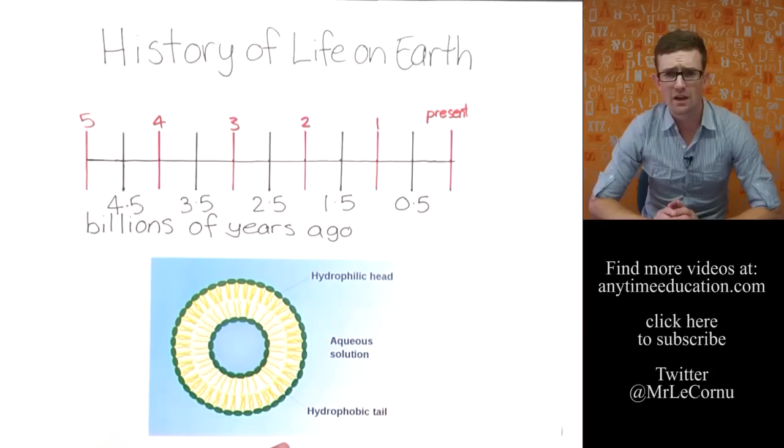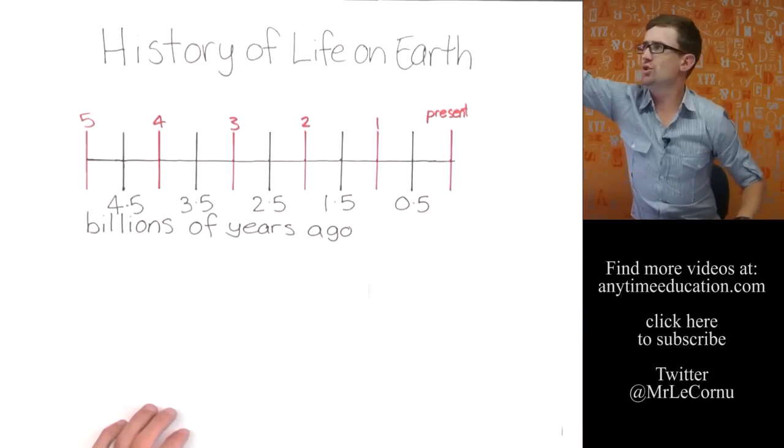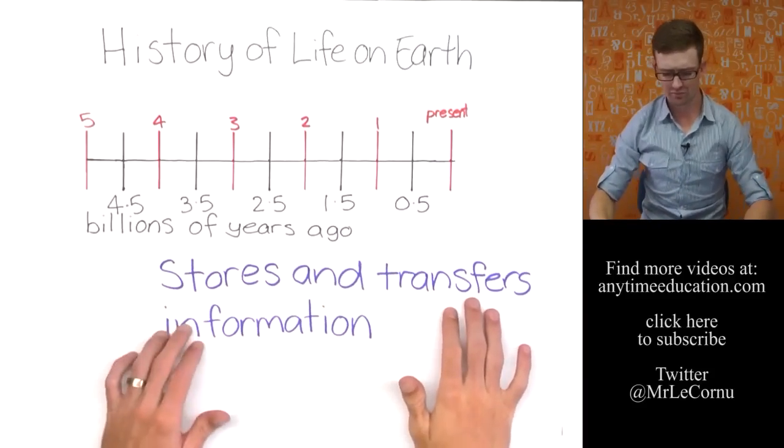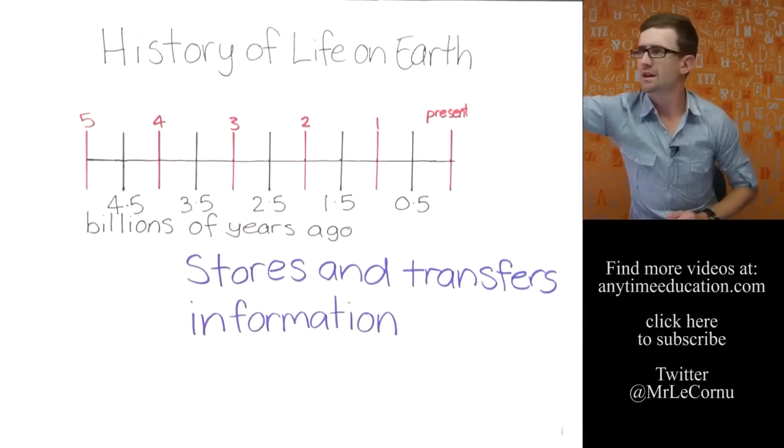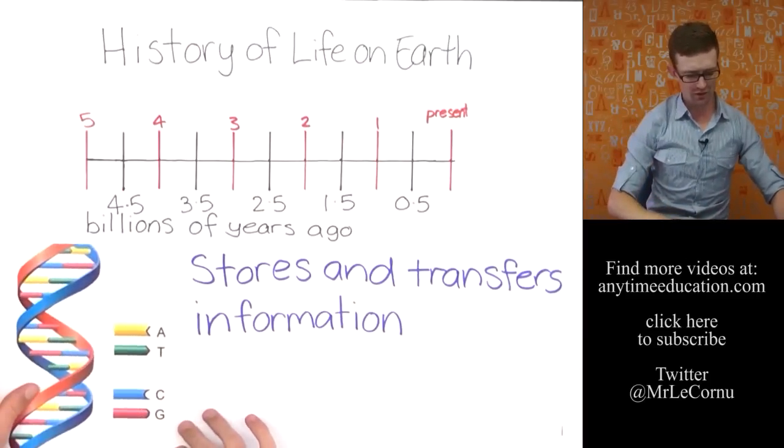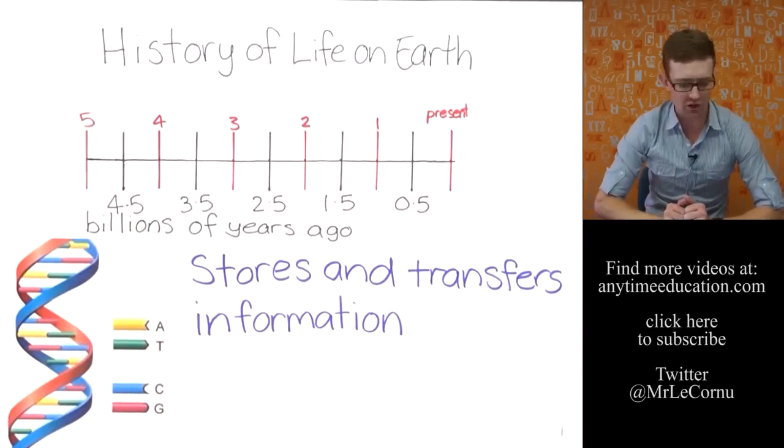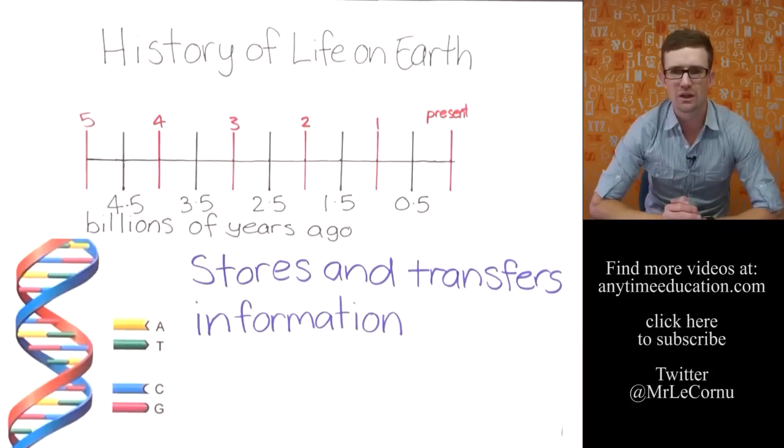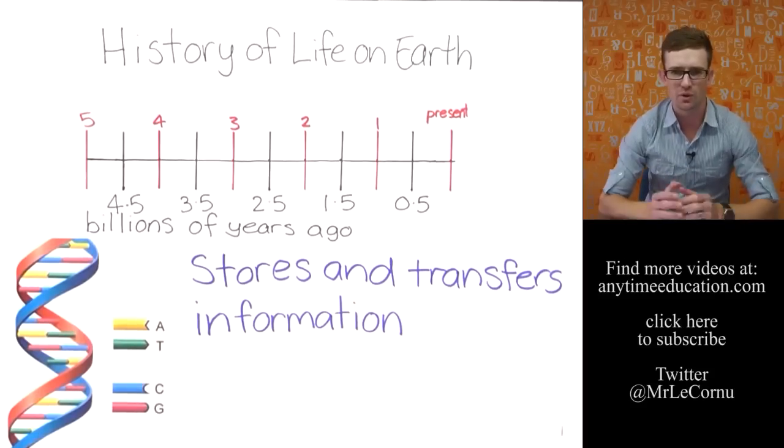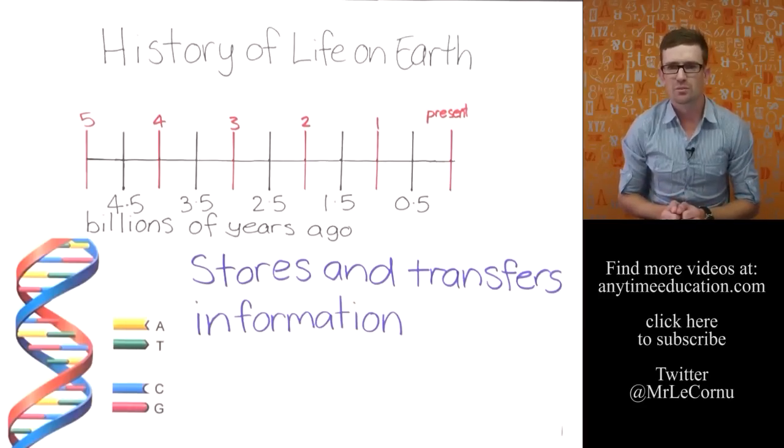Another type of organic compound that formed was one that was able to store and transfer information. That should be triggering something for you there. When we think of storing and transferring information, we think of this molecule here, the DNA. Deoxyribonucleic acid formed. That was able to store and transfer information. And then that was a critical point for life on earth because once we can store and transfer information, the complexity of life begins to improve.